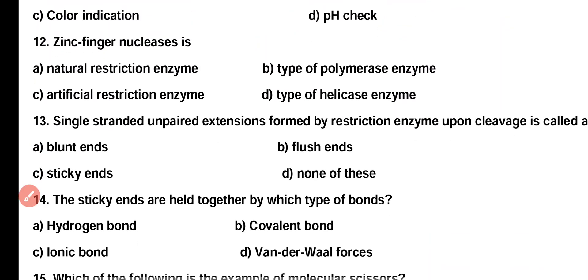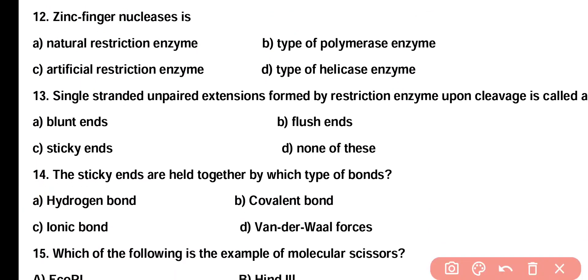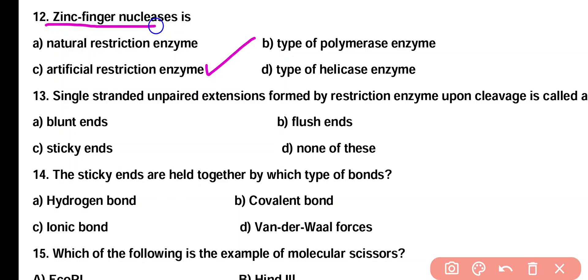Question 12. Zinc finger nucleases is: Option A: natural restriction enzyme, Option B: type of polymerase enzyme, Option C: artificial restriction enzyme, Option D: type of helicase enzyme. Correct answer is Option C. Zinc finger nucleases are artificial restriction enzymes.